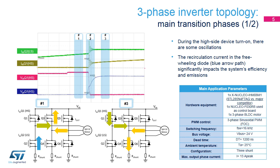The figure shows the drain currents of two devices of the same leg when turning on the high side (HS) power device. First, the turn-on phase — section number one — with current directions and their flowing path are shown in the figure. When switching on the HS device — section number two — the current on this leg has some oscillations, which are also reflected on the low side (LS) device due to the recirculation current in the freewheeling diode.